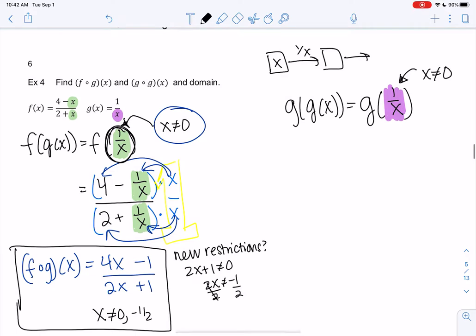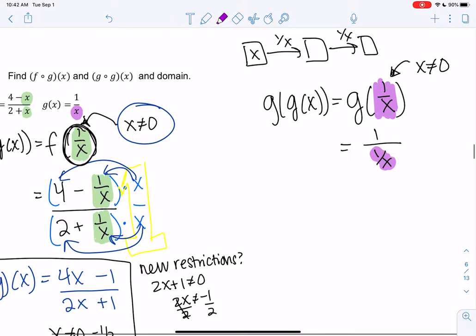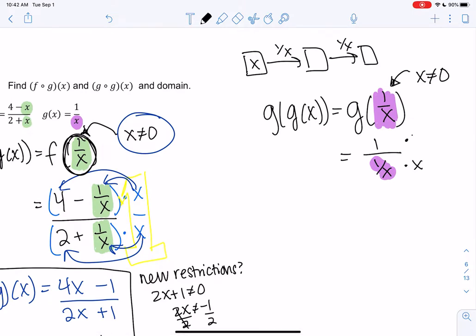And then we're just going to input it into 1 over x again and see what happens. So 1 over x would be 1 over 1 over x here, as weird as that is. We're replacing x with 1 over x. All right, let's zoom in a little. And then how do we simplify this? We can just multiply top and bottom by x. So I get x on top and I get 1 on the bottom, so it's just x.